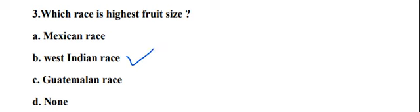There are many characteristics present in these 3 races — which one is tropical, which one is subtropical, which one is semi-tropical, which one is cold tolerant, which one is salt tolerant, which one gives maximum oil content. You have to remember all the characters of the 3 races.